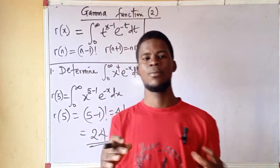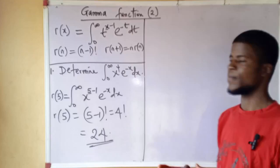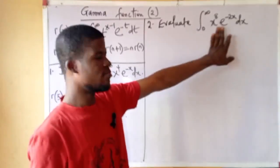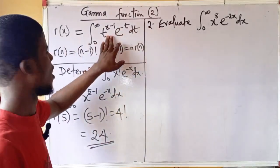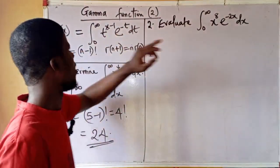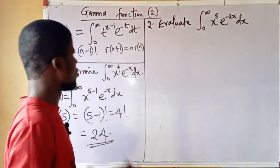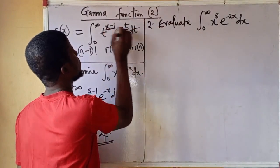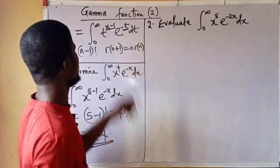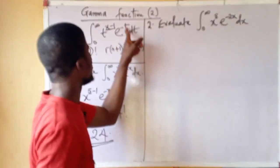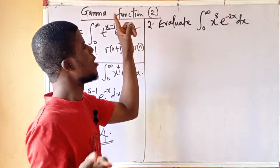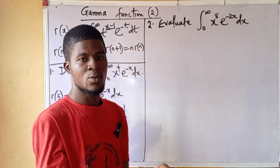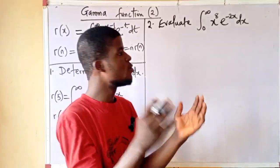You can see the power of the gamma function — how it helps to evaluate difficult integrals that go from 0 to infinity. Now let's look at some other more complicated problems. Looking at the new function versus the definition, the coefficient of t in the definition is minus 1, but in the new question, x has a coefficient of minus 2. So we have to modify the integral to match the standard form.